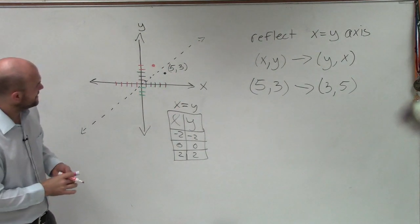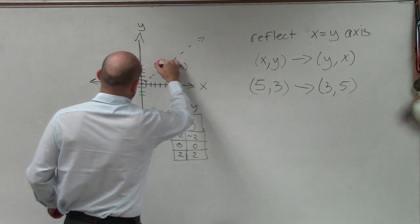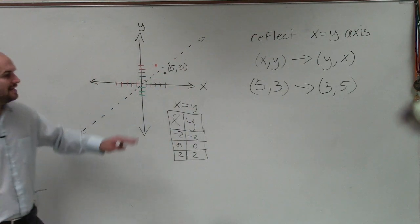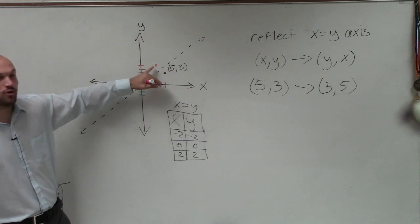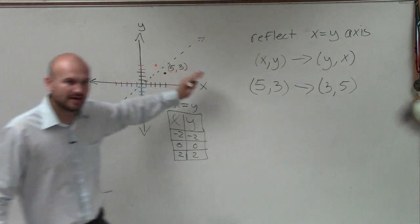So do you guys see? I guess I could probably put that a little bit farther over. Do you guys see how this point, this orange point, is now a reflection over this dotted line? Does everybody see that?